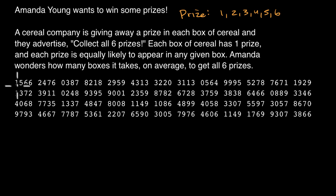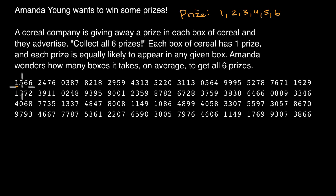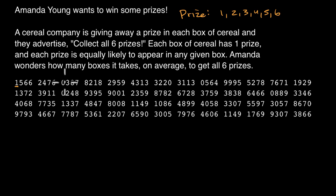The general method: she could start at the left, and each new number she gets is like getting a cereal box that tells her which prize she got. Numbers that aren't one through six — zero, seven, eight, or nine — she could just ignore them and keep going past them.